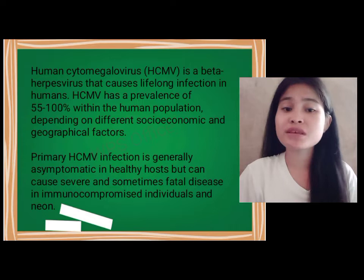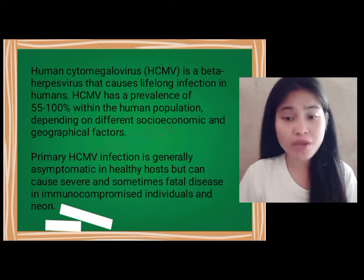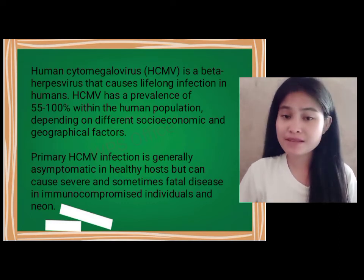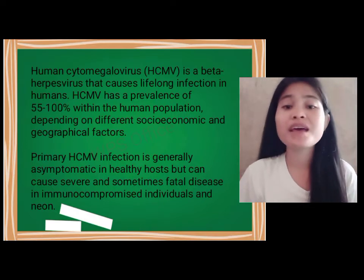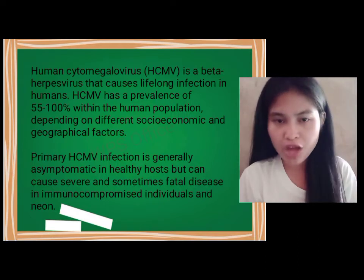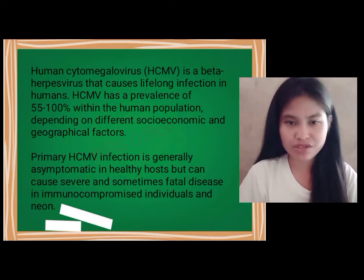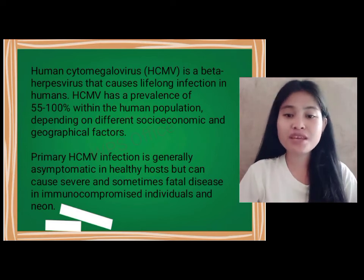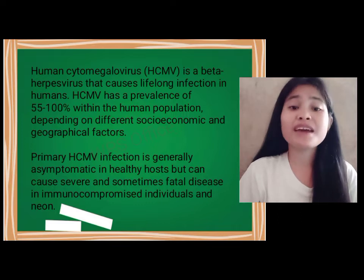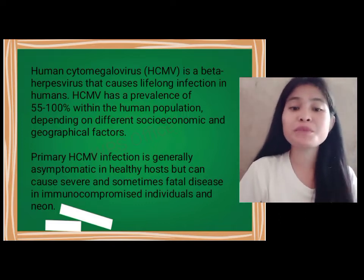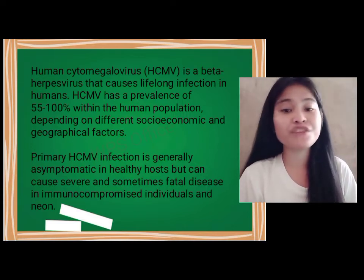Human cytomegalovirus is a beta herpesvirus that causes lifelong infection in humans. HCMV has a prevalence of 55 to 100% within the human population, depending on different socioeconomic and geographical factors. Primary HCMV infection is generally asymptomatic in healthy hosts but can cause severe and sometimes fatal disease in immunocompromised individuals.